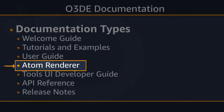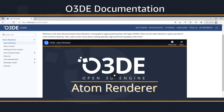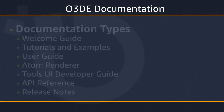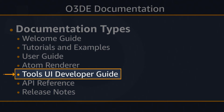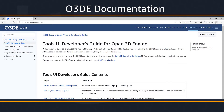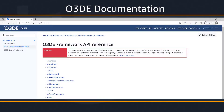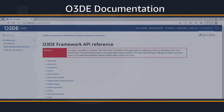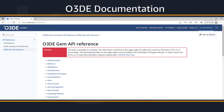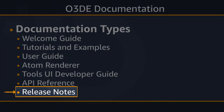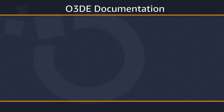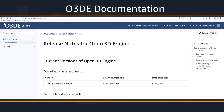Then there's the section that deals with the Atom Renderer — a feature and reference document for Atom Renderer and its tools and editors. Next, we have the Tools and UI Developer Guide, which is a style and implementation guide for the UI used throughout O3DE's tools and the Atom Renderer. Then there's the API Reference, which is automatically generated and consists of information about the O3DE Framework API and the APIs for the various O3DE gems. Finally, we have Release Notes, which include new features, fixes, and known issues.